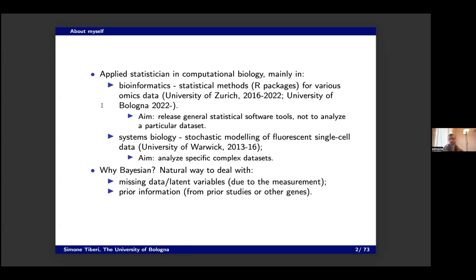The second reason is that in biology, you often have additional information about your data and parameters that could come from other studies. Maybe someone five years ago did some analysis and found the degradation or synthesis rates of the organism you're studying. Or information could come from other genes — although each gene behaves differently, the other genes can still tell you something about the specific gene you're studying. That can be embedded in a very natural way as prior information. So Bayesian statistics gives you a very elegant and formal way to deal with these two issues.